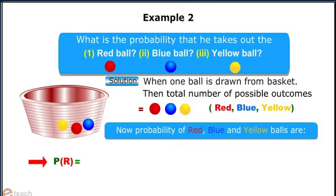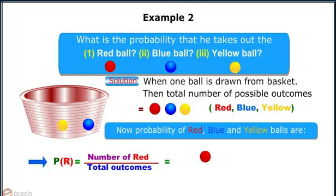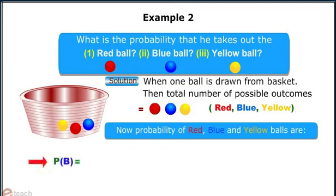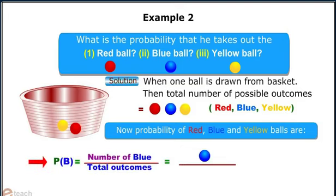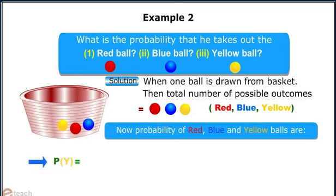Probability of red equals number of red balls divided by total outcomes, which is equal to 1/3. Similarly, the probability of getting blue ball is also 1/3 and again 1/3 for yellow ball as well.